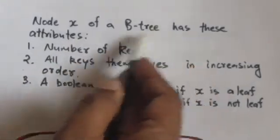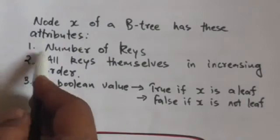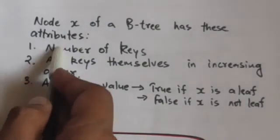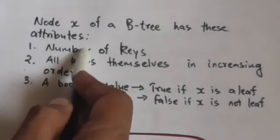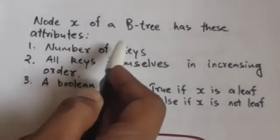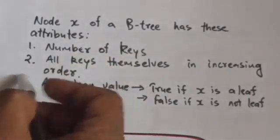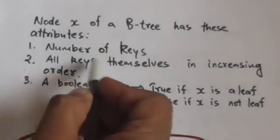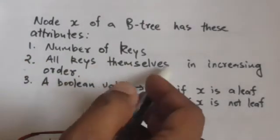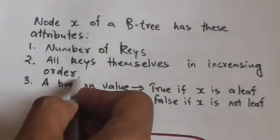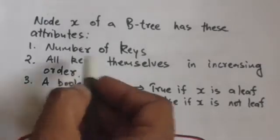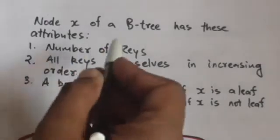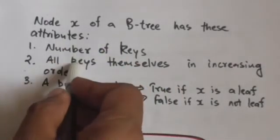Every node x of a B tree has these attributes. First is the number of keys currently stored in node x. Second is all the keys themselves stored in node x.